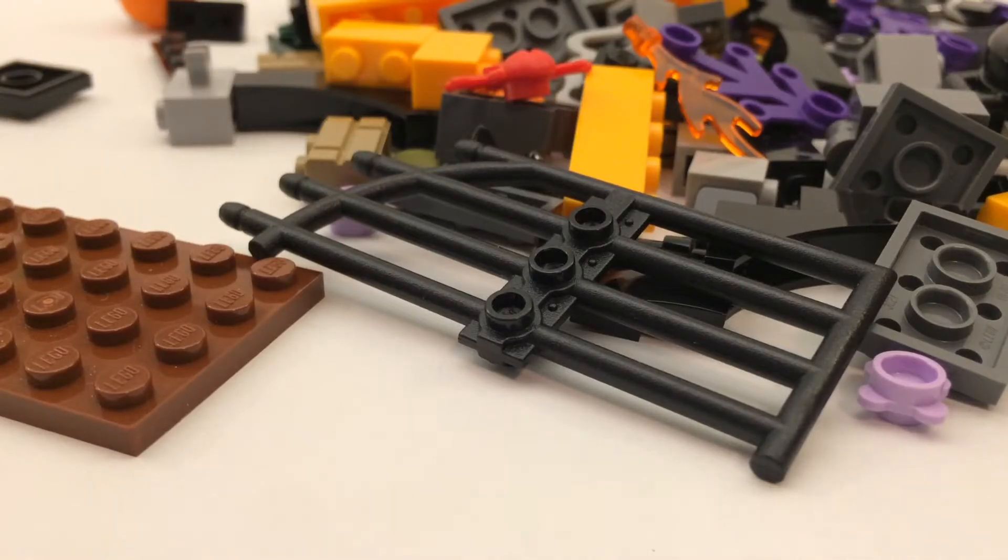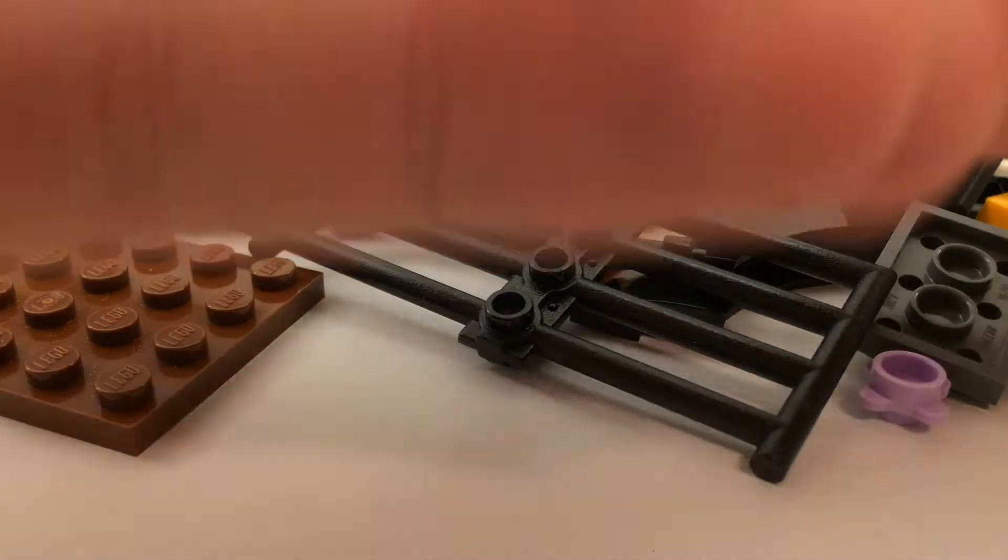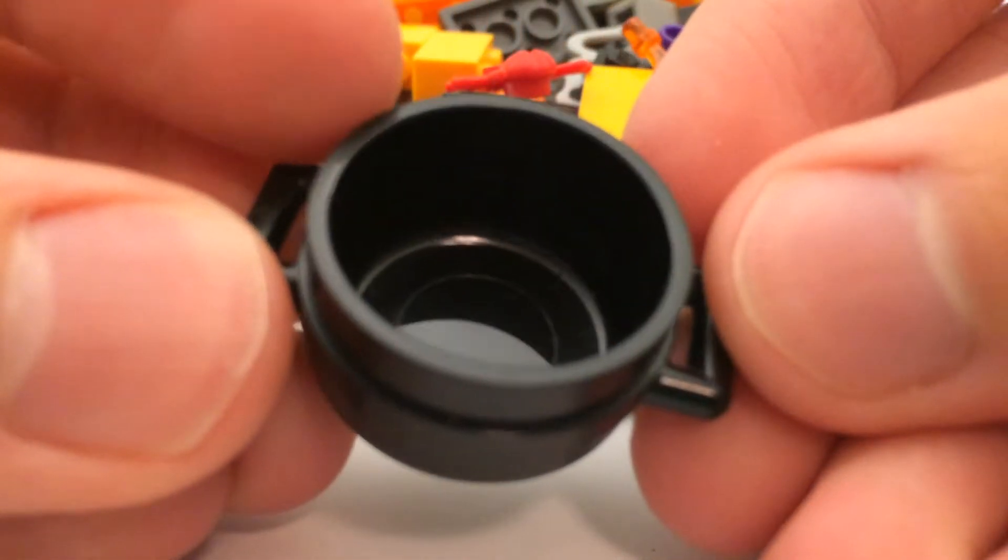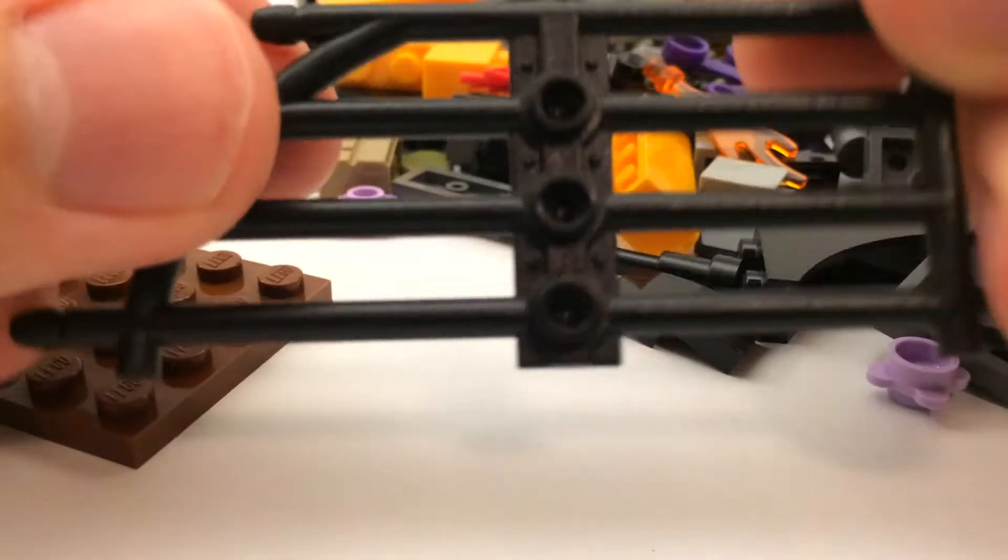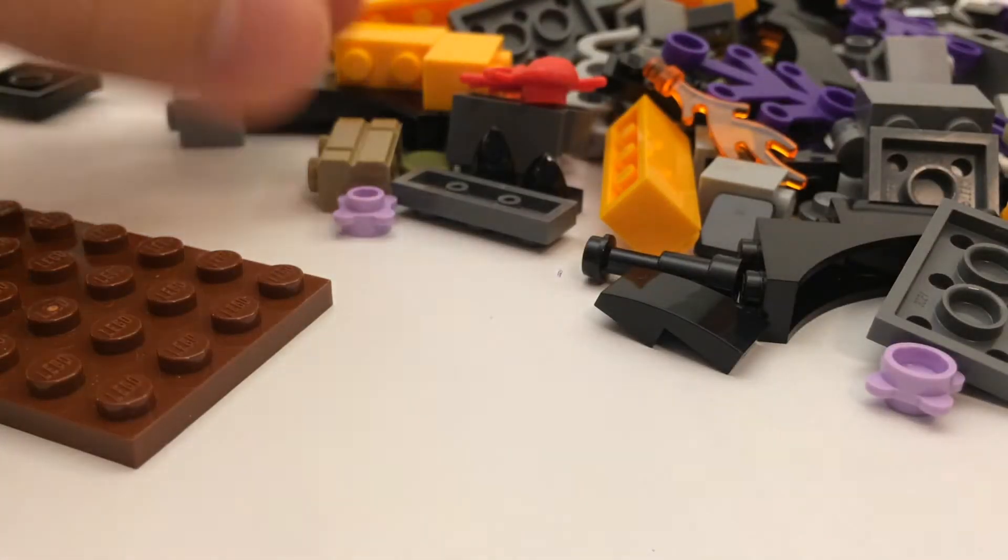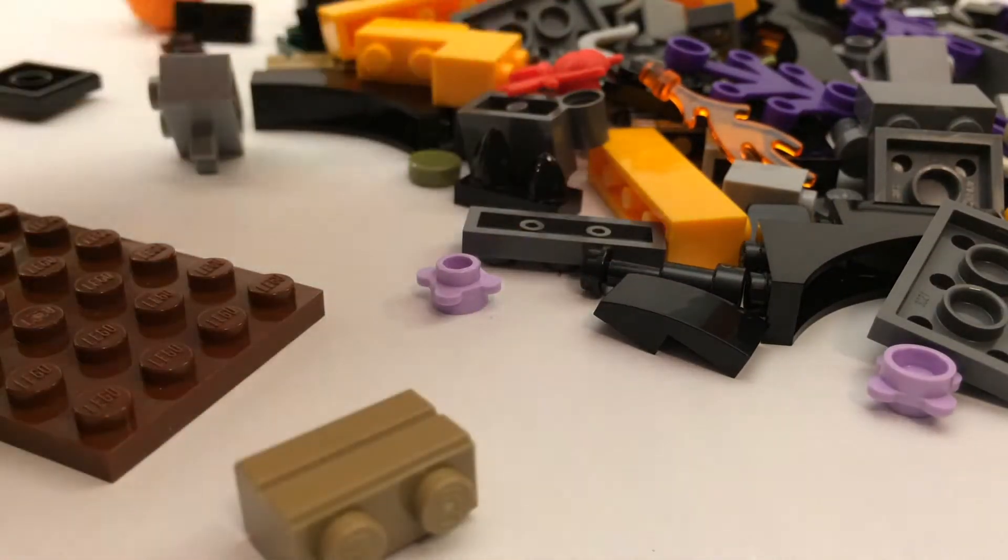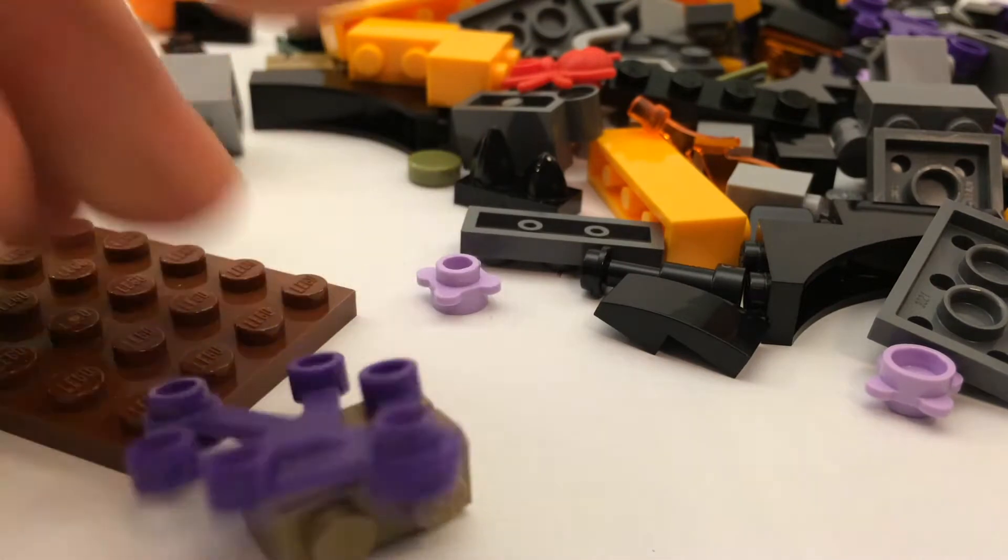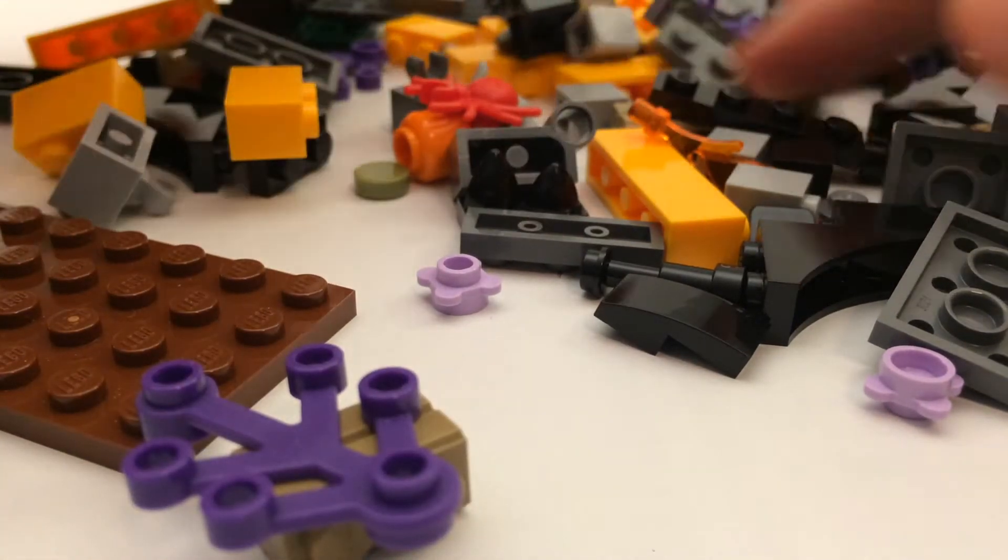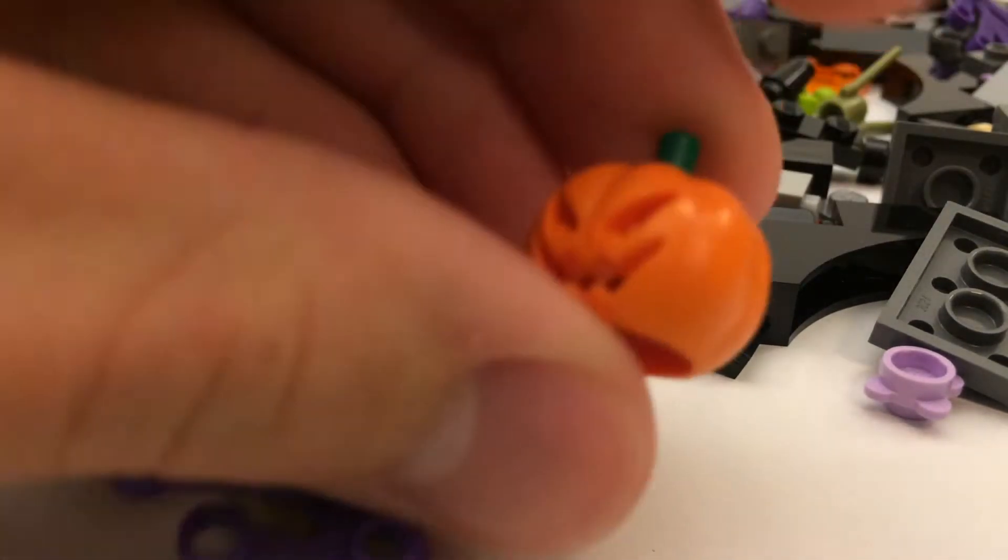This set does include a couple cool elements that I'd like to point out, including the cauldron, the gate pieces. It comes with a couple of masonry bricks, tree branches in purple, and best of all, you know it, the jack-o'-lantern.